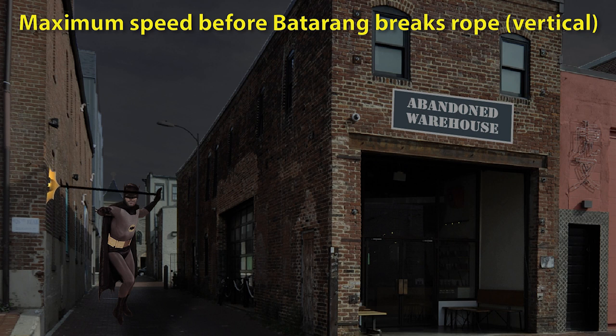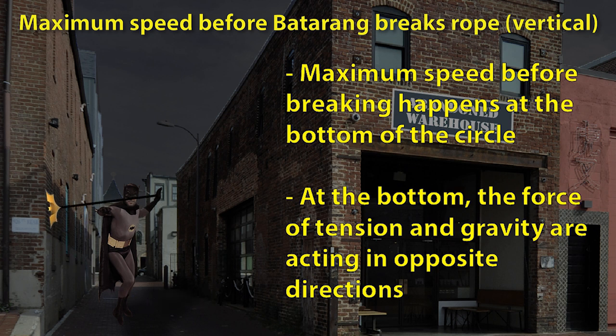Well now what we need to do is start to think about the force of gravity as well. The position where this rope is going to break is at the bottom of the circle because at the bottom of the circle we have sort of a tug of war between the force of gravity pulling down and the force of tension from Batman pulling up. So we're going to take a look at this situation now and see if we can deal with these two opposite direction forces to work out the maximum speed.